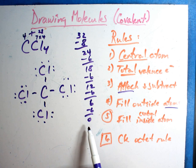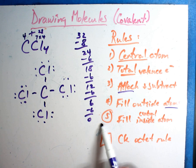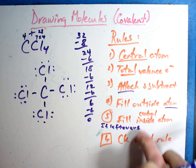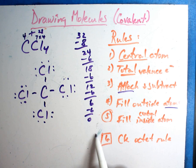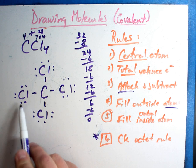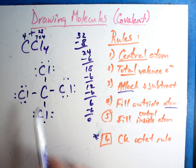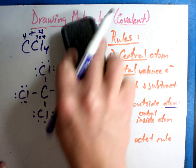You'll see rule five has a circle around it - you may want to write this in the margin: if there are leftovers, follow rule five. Do I have any leftovers? Nope. So I skip that rule. The most important rule of all: check the octet rule - everybody should have eight. Chlorine: two, four, six, eight - full. All four chlorines are full. Carbon: two, four, six, eight - full. Everybody is full. You'll notice this picture matches the exact one we drew before. If you follow the rules and do the math, it works out every time.